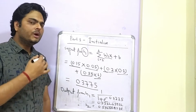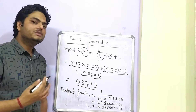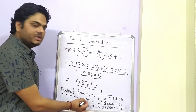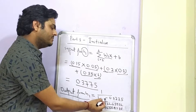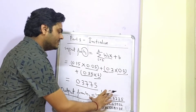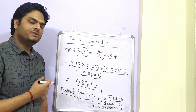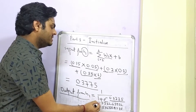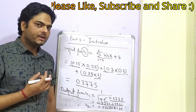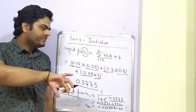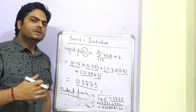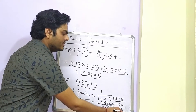Now, what comes out from the hidden layer H1? There is an activation function which acts on the input value. The output from H1 is computed as 1 / (1 + e^(−0.3775)). The output of this sigmoid activation function is 0.59326992, and this number goes as output from H1. Similarly, the output from H2 is calculated with the same method.